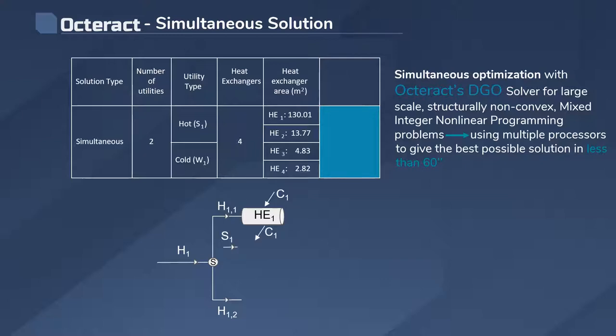C1 is heated up and then it is further heated up with the use of S1, the hot utility, inside heat exchanger four.